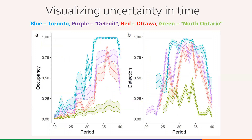We can visualize uncertainty in time for our model outputs of occupancy and detection. Here I'm looking at four of 34 public health units in Ontario: in blue we have Toronto, in purple a region near Detroit, in red Ottawa — the capital of Canada — and in green a county in Northern Ontario. The mosquito season ranges from epidemic week 20 to 40, which is about May to October. We see a peak in occupancy around July and August in the warm summers, and accordingly we see that public health departments increase their efforts to detect the virus during these periods.